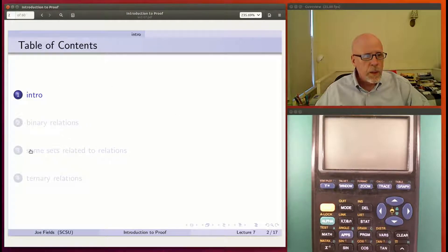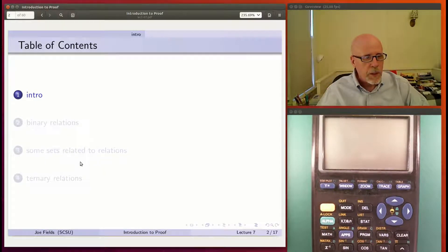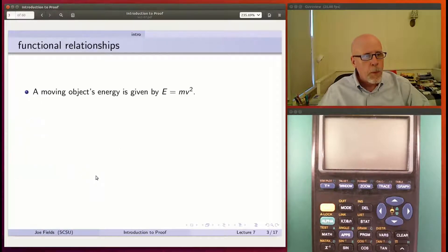Today we're covering section 1.7 in the book, which is about relations. The layout of the talk will go like this: we'll have some introductory remarks about relations in general, then we'll particularly dive into binary relations. Towards the end, we'll mention a couple of sets that are important when studying relations, and finally, we'll do an example or two of ternary and higher order relations.